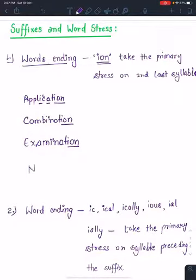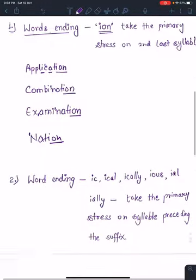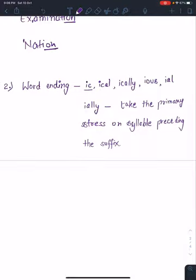Nation. If we have words ending with I-C, I-C-A-L, I-C-A-L-L-Y, I-O-U-S, I-A-L - these word endings take the primary stress on the syllable preceding the suffix. Take the primary stress on syllable preceding the suffix. Like, for example: